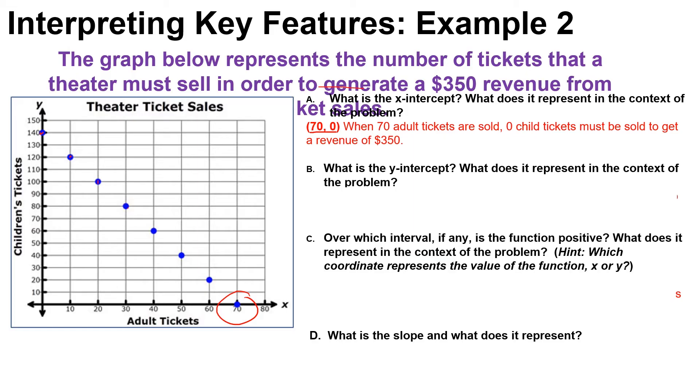Let's look at b. What is the y-intercept? The y-intercept is right here where the graph crosses the y-axis. That ordered pair would be (0, 140). So the y-axis is represented by the children's tickets, forgot to mention it earlier, and the x-axis is represented by the adult tickets.